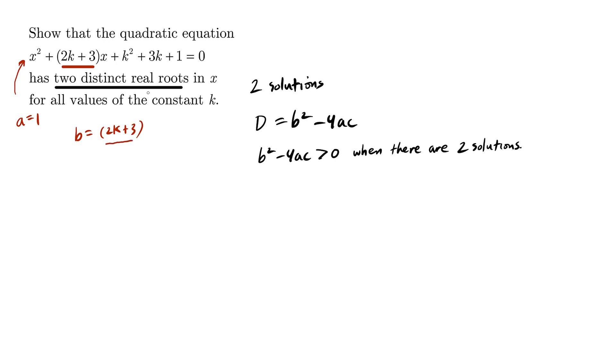And finally, our c value is k squared plus 3k plus 1, whatever is left over, k is a constant. Don't make the mistake of saying that c is 1.